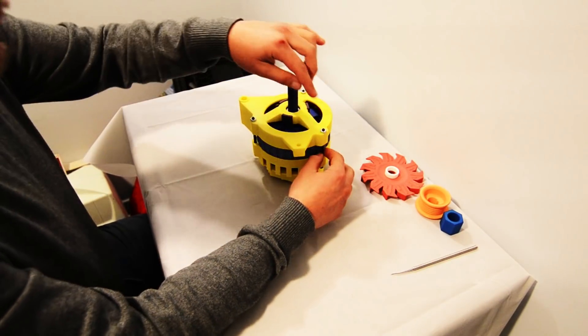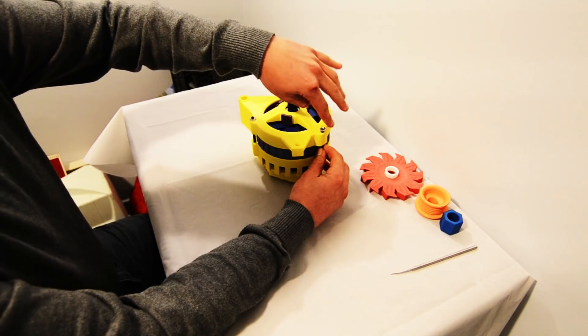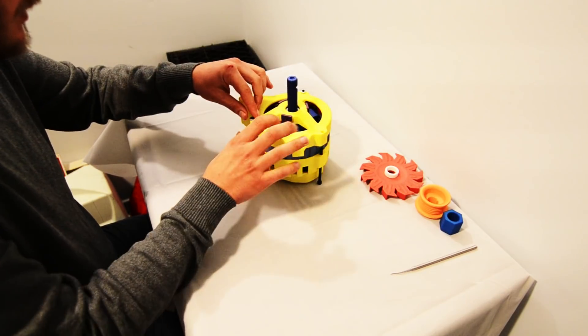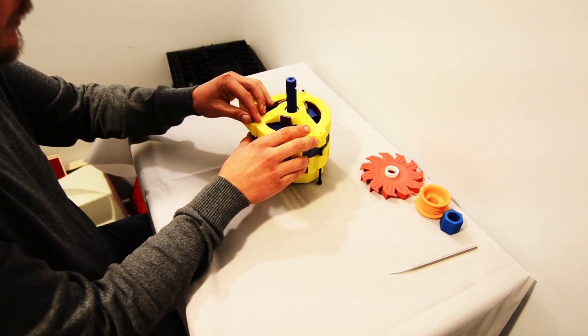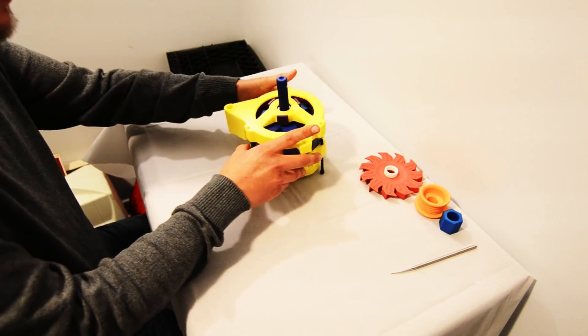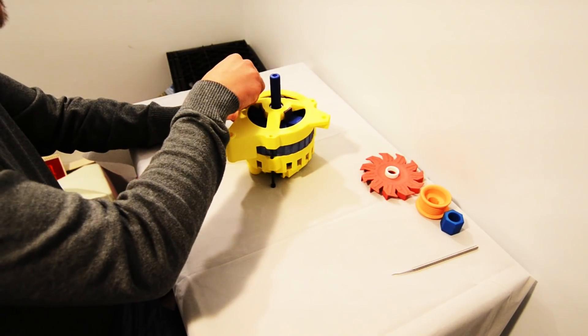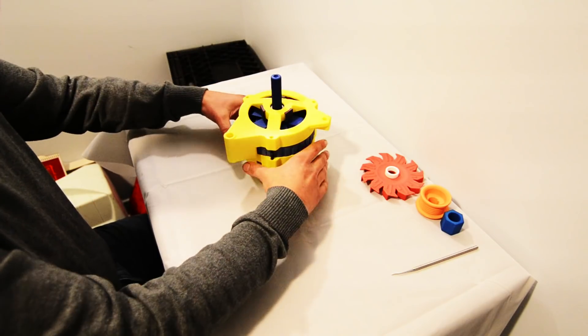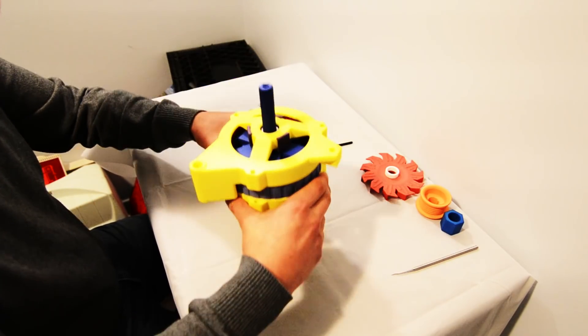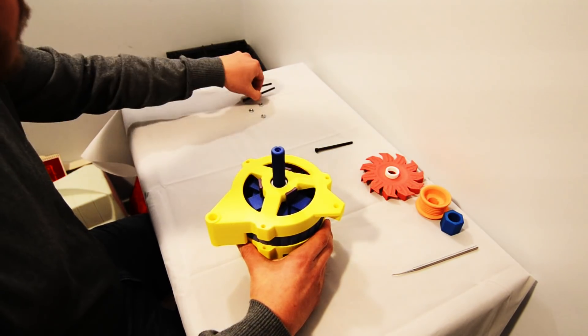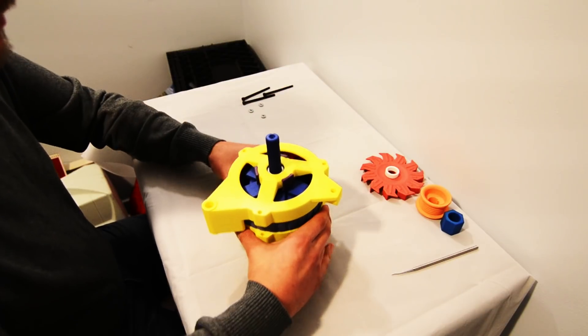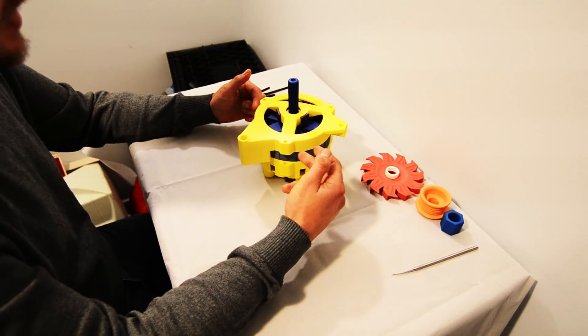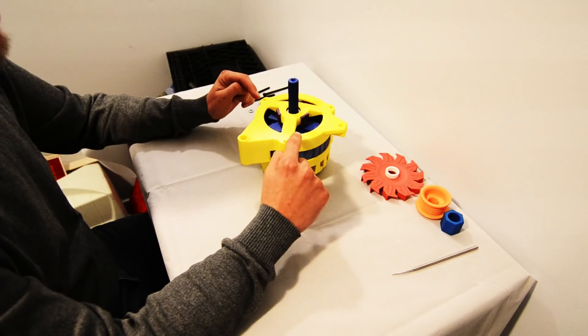So, let's go ahead and pull off the M5 hardware that's holding the cases together. And we'll set those aside. Alright, so now that you've got your M5 hardware off, you can now pull the upper case apart.